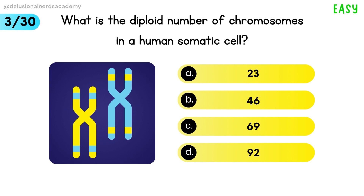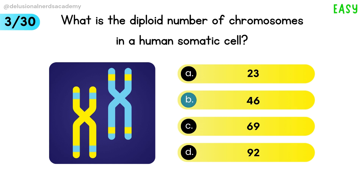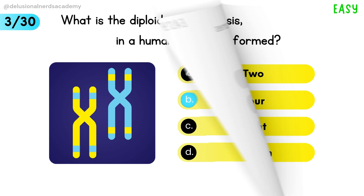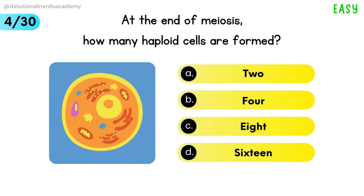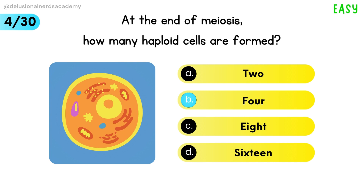What is the diploid number of chromosomes in a human somatic cell? 46 is the answer. At the end of meiosis, how many haploid cells are formed? Four haploid cells are formed.